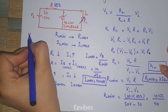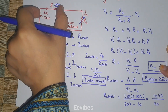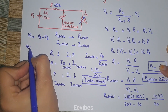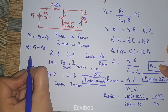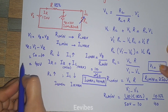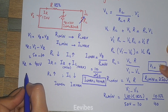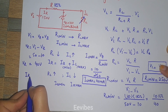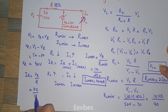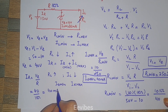Applying KVL: V_i = V_R + V_Z, so V_R = V_i − V_Z = 50 − 10 = 40 volts. This is the voltage across the series resistor R. From here we determine IR: IR = V_R / R = 40 V / 1 kΩ = 40 milliamperes. This is the total current flowing through the series resistor.